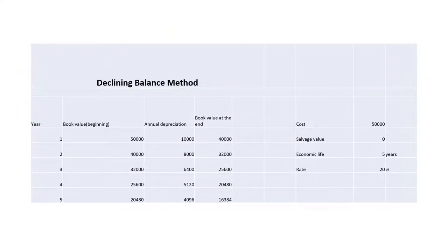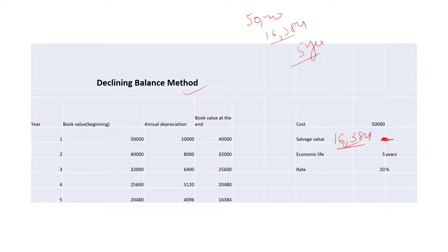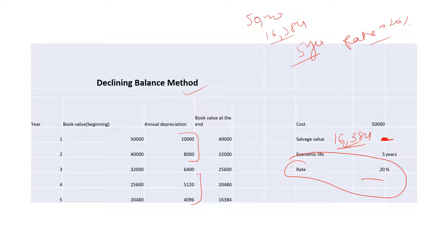Now we move to the Declining Balance Method. Mr. Ram has purchased the same machine but decided to charge depreciation under this method. Here the salvage value is not zero — it is rupees 16,354, meaning the machine can be sold for that amount. The cost is 50,000, salvage value is 16,354, economic life is five years, and the depreciation rate is 20%. Under this method, a higher amount is charged in the initial years and a lesser amount in the later years, applied to the beginning book value.